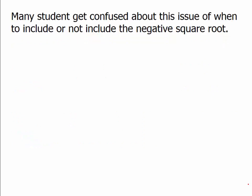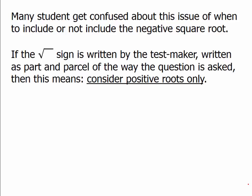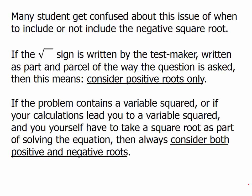Many students get confused about when to include or not include the negative square root — this is a very subtle distinction. Situation number one: if the square root sign is printed by the test maker as part of the problem, then that means consider the positive root only. But many times in a problem, we wind up with a variable squared through our own calculations, and then we ourselves have to initiate taking a square root to solve for x. When we are the ones initiating taking a square root, we always have to consider both the positive and the negative root.